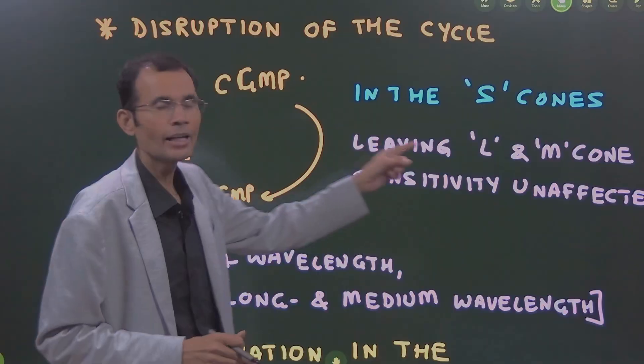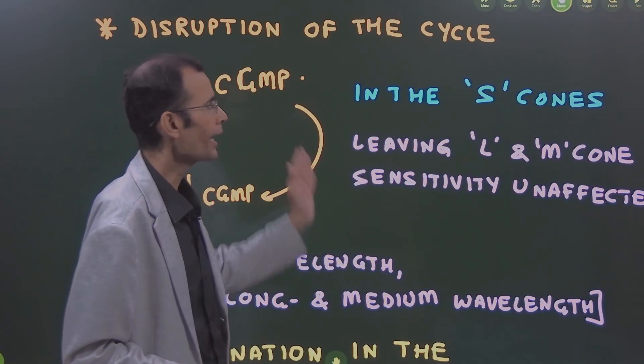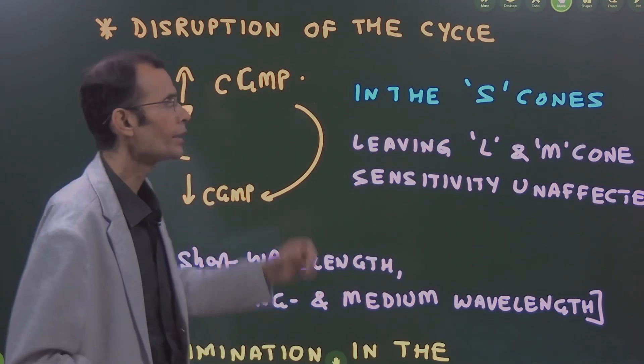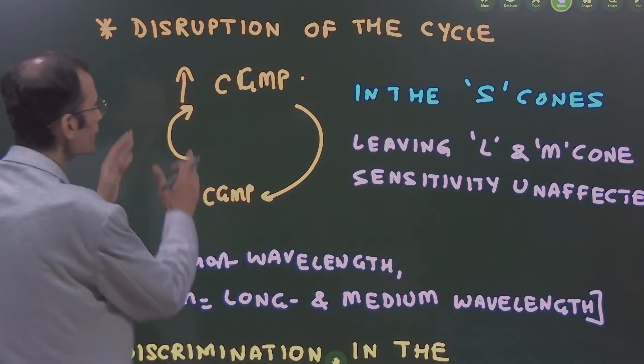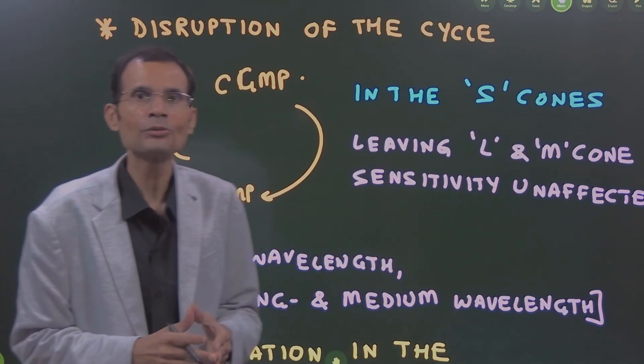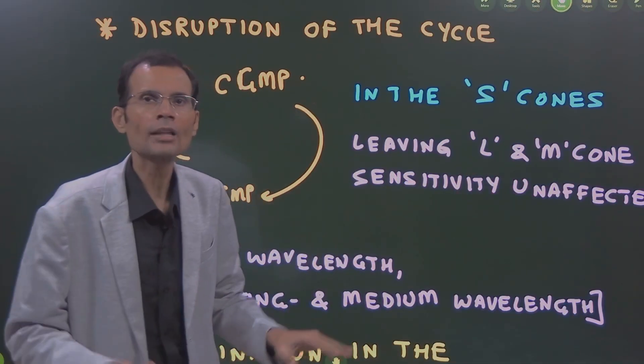This happens particularly in the S cones. There are S cones, L and M cones—as in short wavelength, long and medium wavelength type of cones. This is particularly observed in the S cones, leaving L and M cones unaffected.